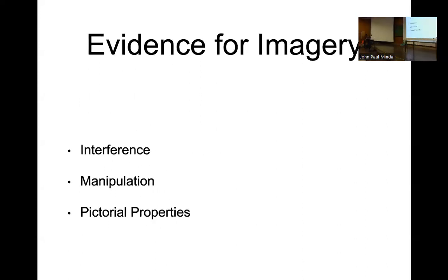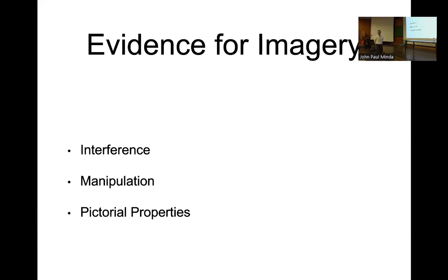There's also a primacy-recency effect for alphabetizing — most people can alphabetize things at the beginning and also at the end of the alphabet more quickly, in addition to this song-based effect. I want to talk about three kinds of evidence for mental imagery: interference evidence, manipulation evidence — evidence that you can manipulate mental images analogously to how you'd manipulate a real object — and finally, evidence that speaks to the pictorial properties of mental images.